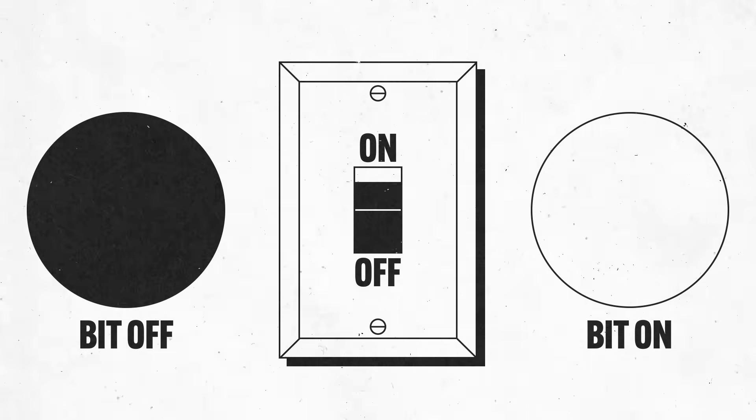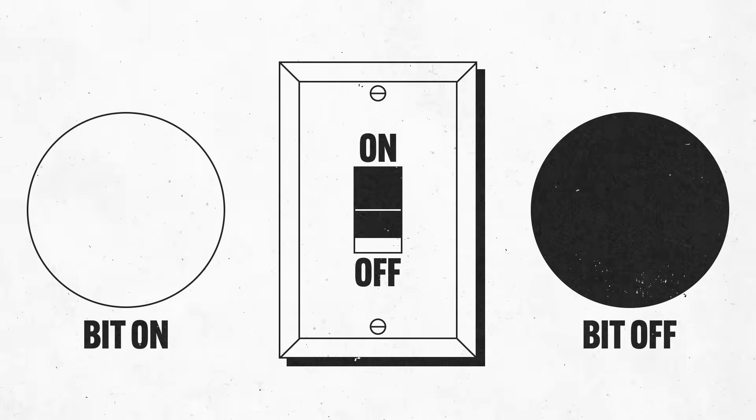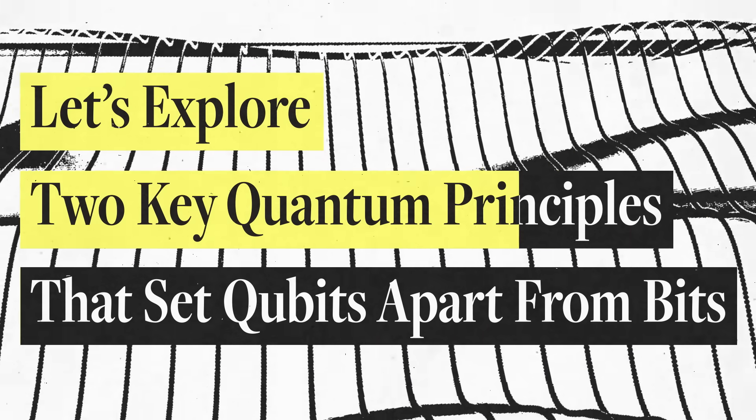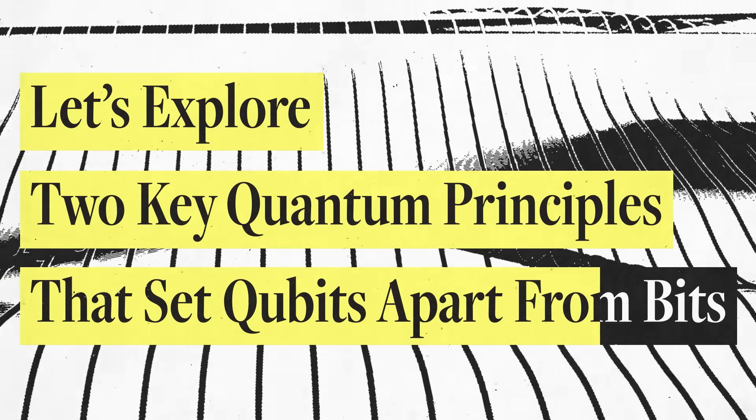Unlike regular computers that use bits to process and store information, quantum computers use qubits. Let's explore two key quantum principles that set qubits apart from bits.